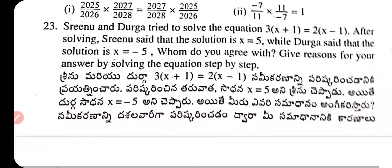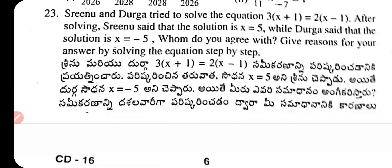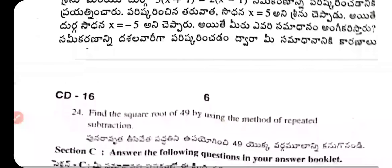Question 22/23: Sirinu and Durga tried to solve the equation 3(x + 1) = 2(x − 1). Sirinu said the solution is x = 5, while Durga said x = −5. Whom do you agree with? Give reasons by solving the equation step by step.